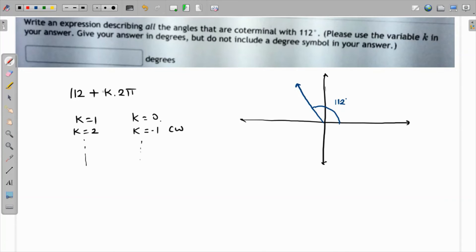So the angle is nothing but 112 plus k times 2π, where k is the variable and k is actually an integer in our case.